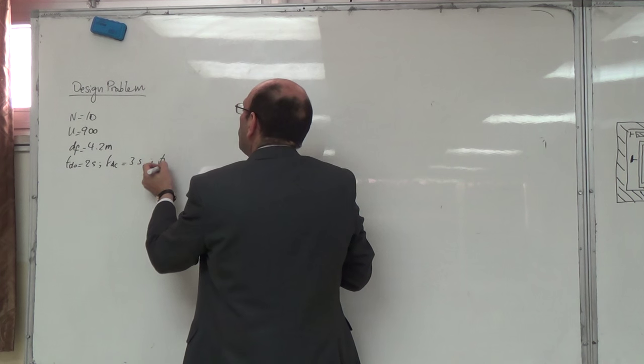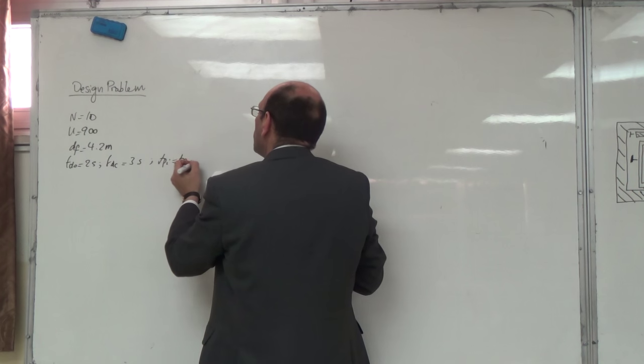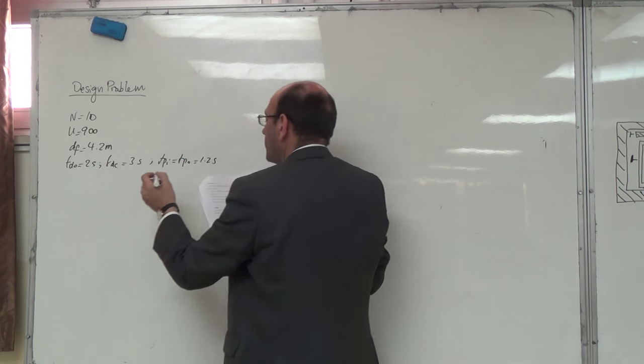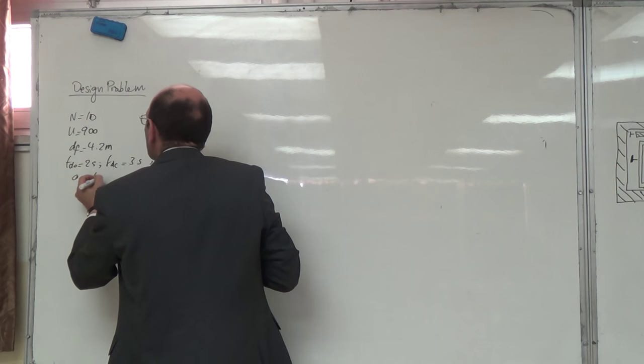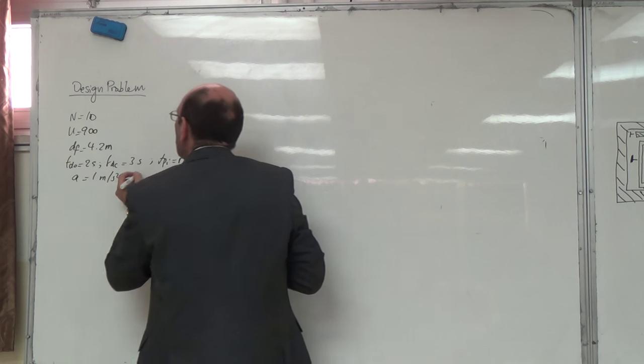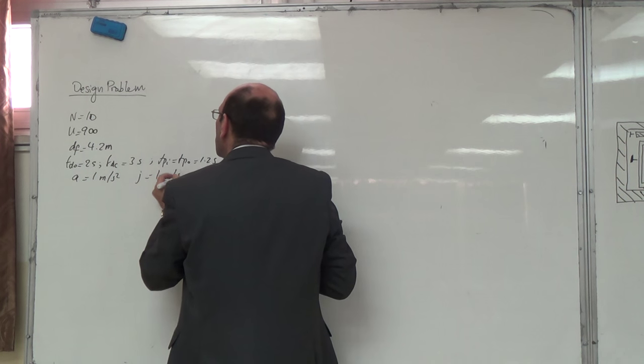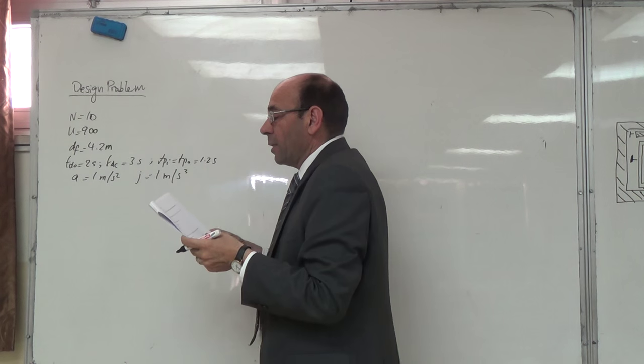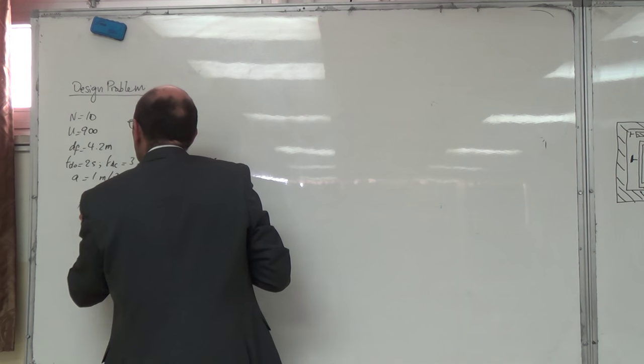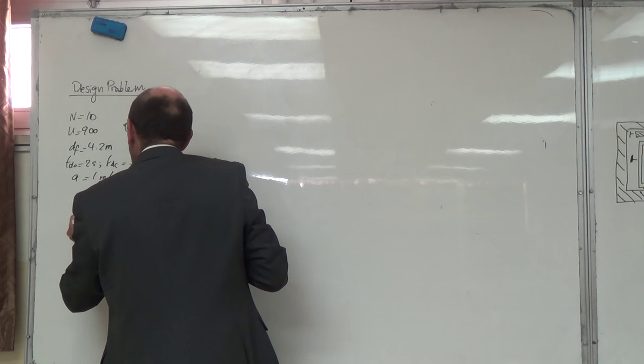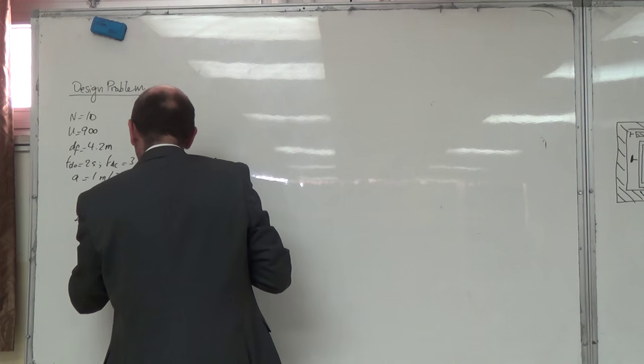Design problem. TPN بتساوي TP out بتساوي 1.2 seconds. نفس الأرقام اللي استعملناها قبل هيك. وحطينا A بتساوي 1 meter per second square و J بتساوي 1 meter per second cube. عنا AR بتساوي 12 بالمية و Interval Target بساوي 30 seconds.